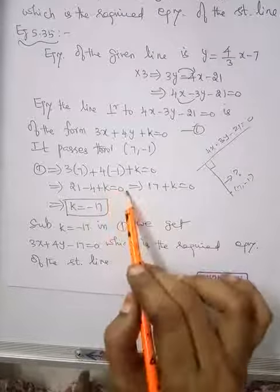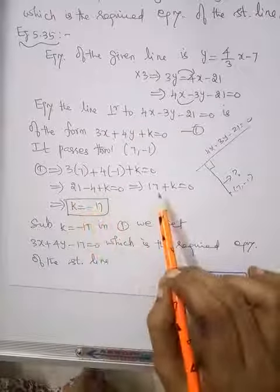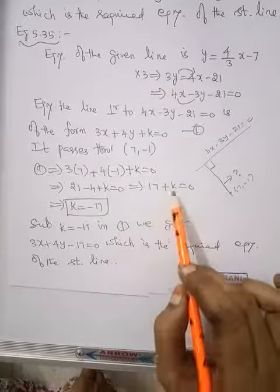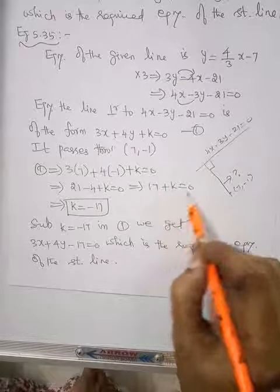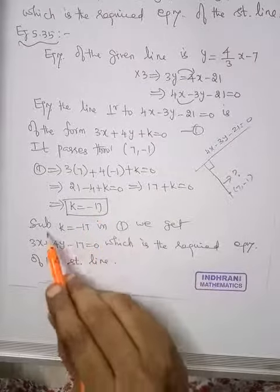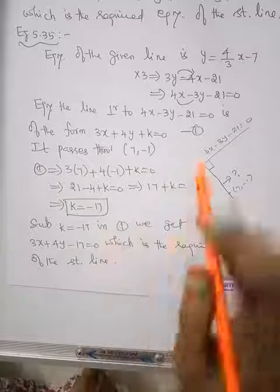So 21 minus 4 plus k is 0. 21 minus 4 is 17. 17 plus k equal to 0. Bring 17 to this side. k equal to minus 17.